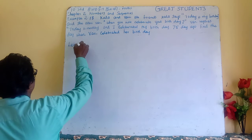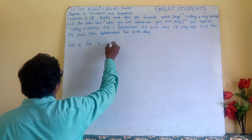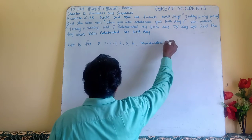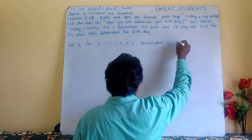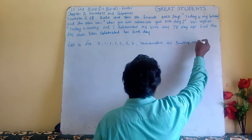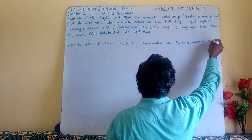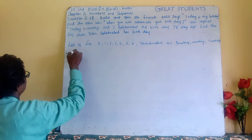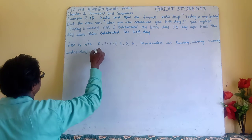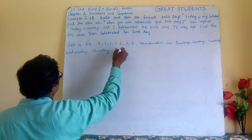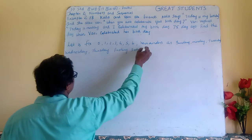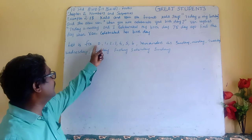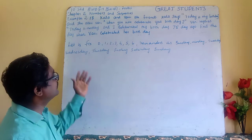Let us fix the remainders as: 0 = Sunday, 1 = Monday, 2 = Tuesday, 3 = Wednesday, 4 = Thursday, 5 = Friday, 6 = Saturday. So the cycle value is 0 to 6, Sunday to Saturday.